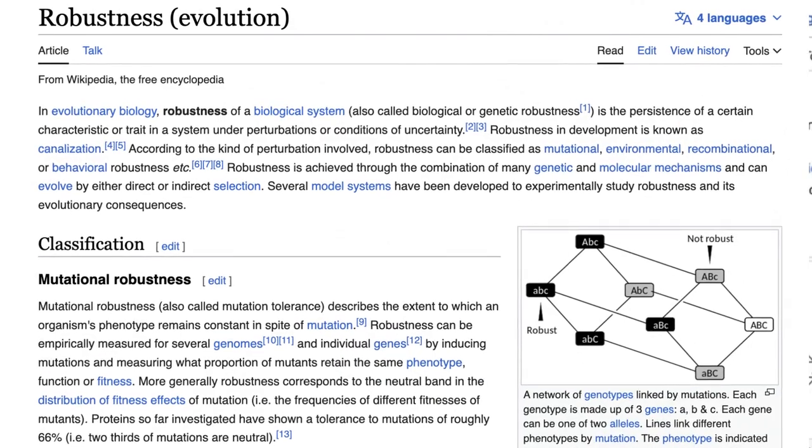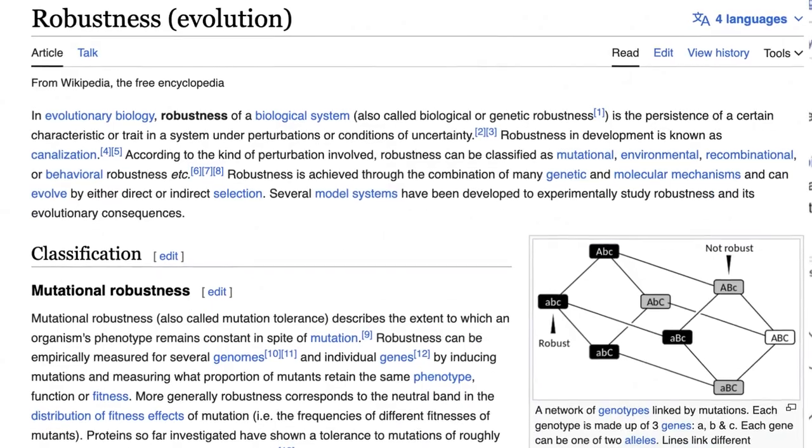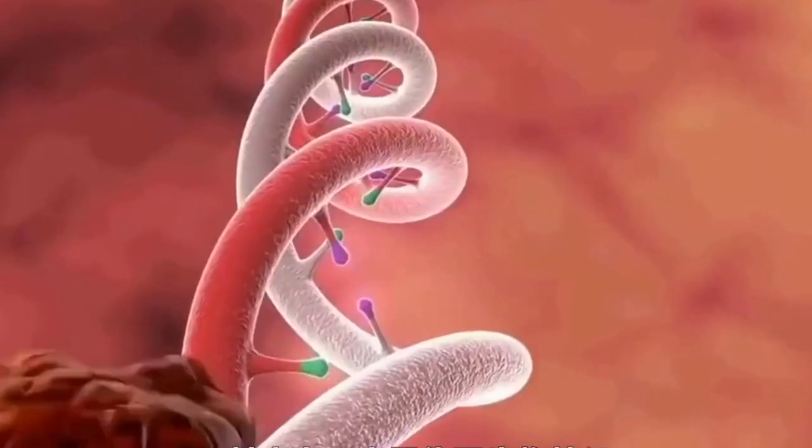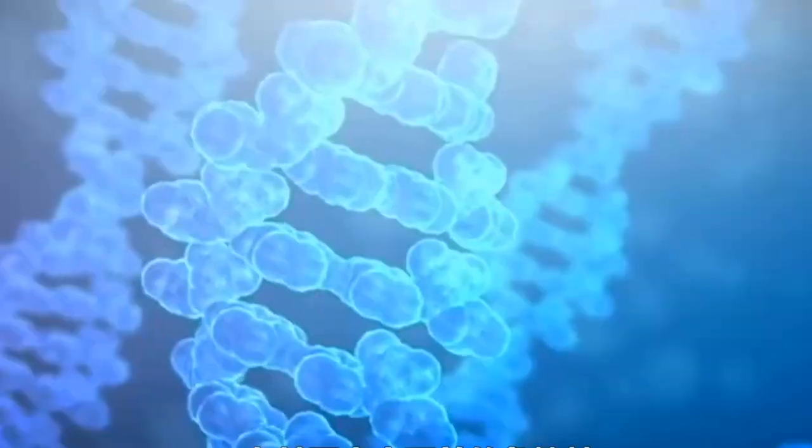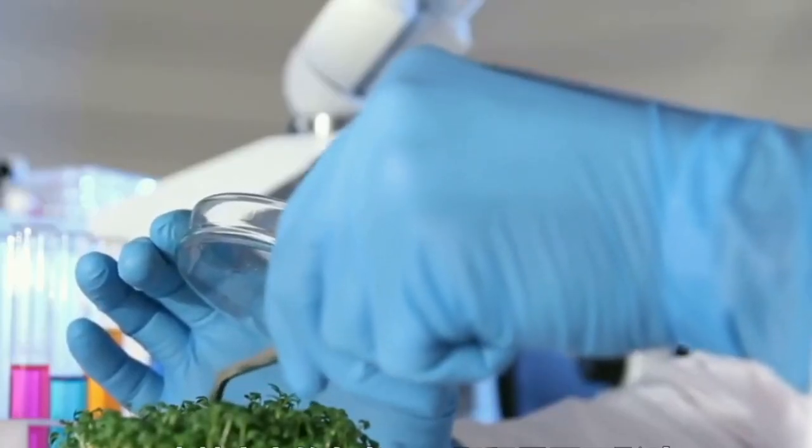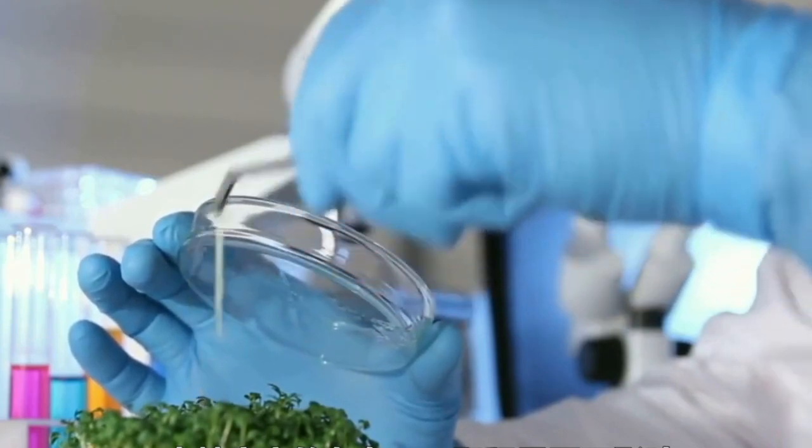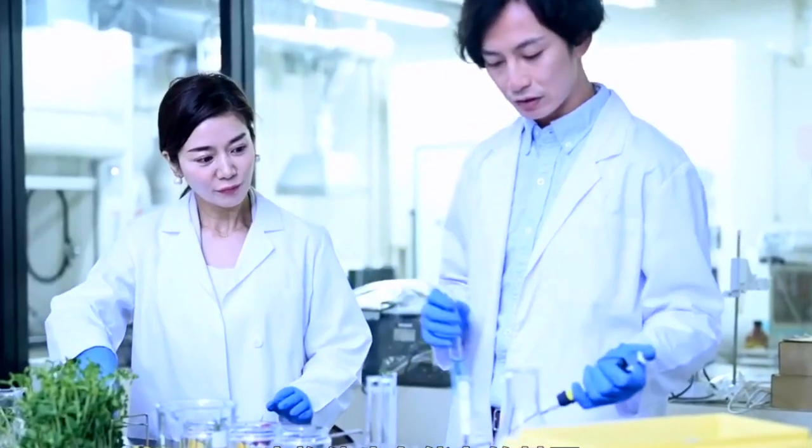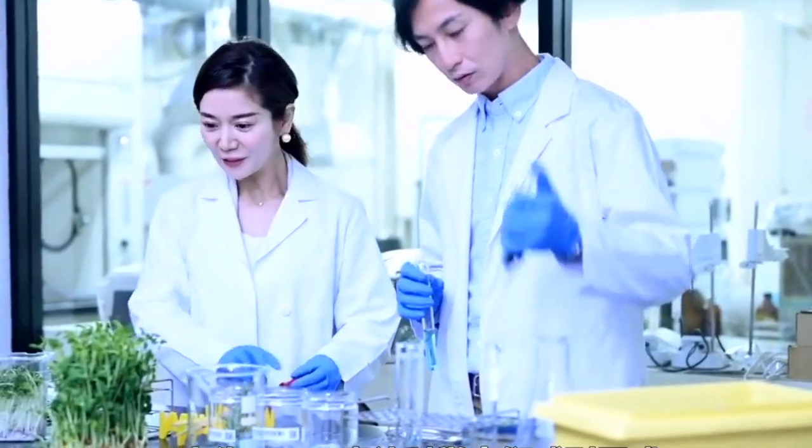Phenotype mutational robustness is a pivotal aspect of genetics, representing the average probability that a point mutation within a genome will not lead to a change in the organism's observable traits or characteristics. Essentially, it quantifies the stability of these traits in the face of genetic mutations.